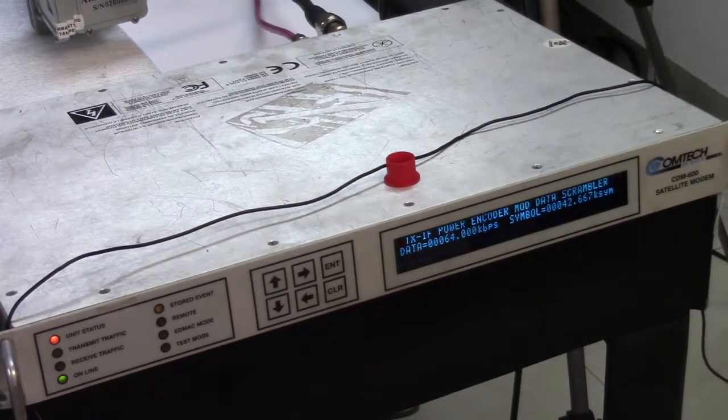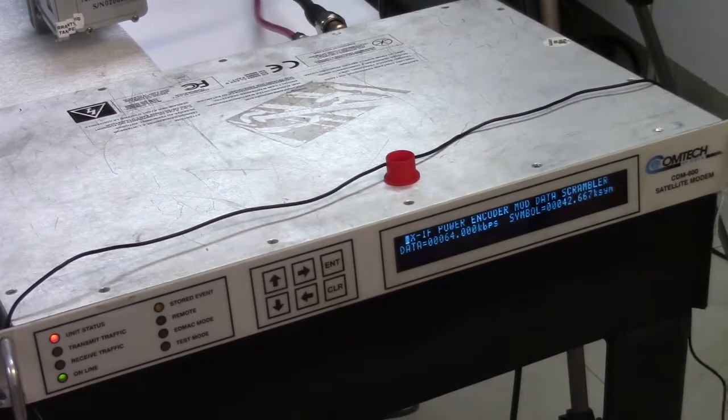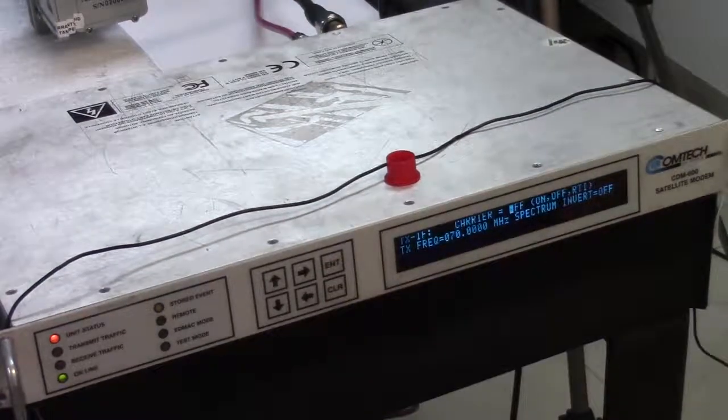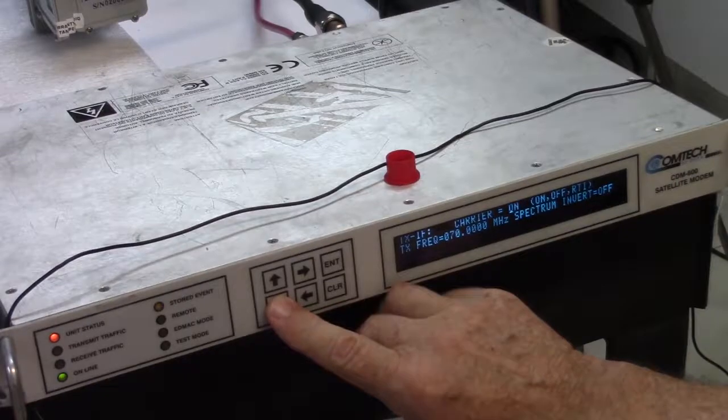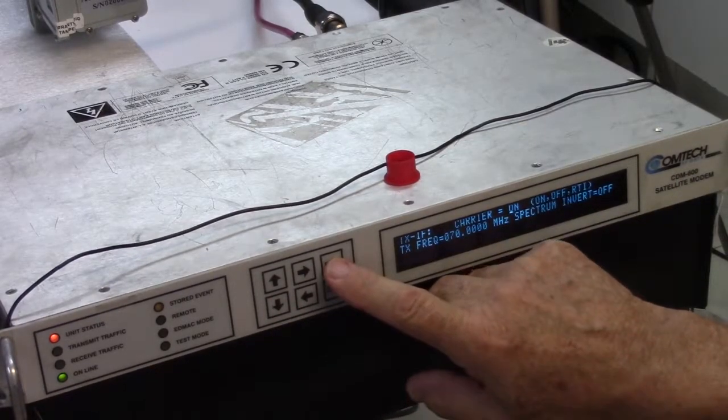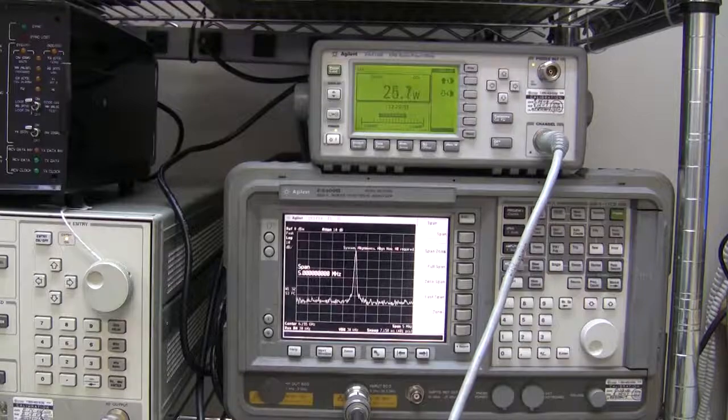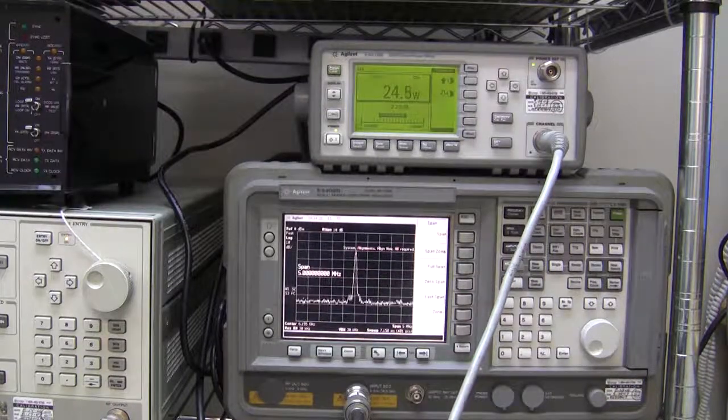Okay the modem is on TX-IF. The carrier is turned off. I'm going to press the down button and now when I press on you should see a signal appearing on the spectrum analyzer and also on the power meter.